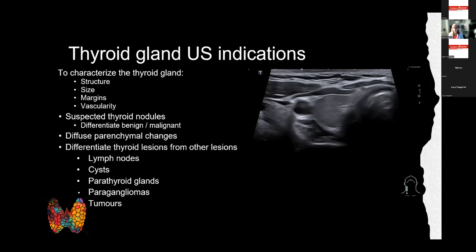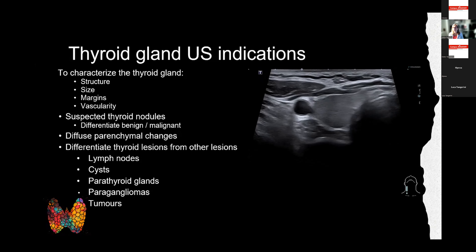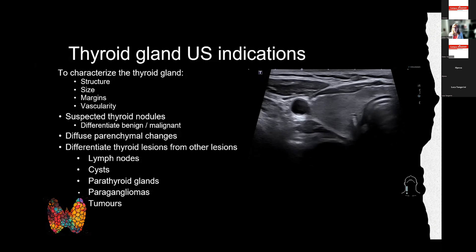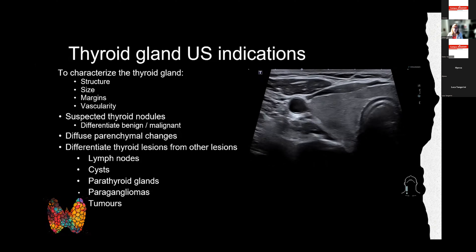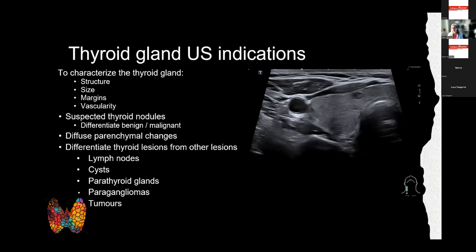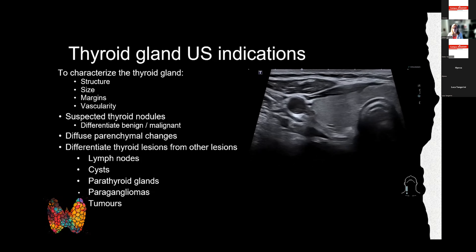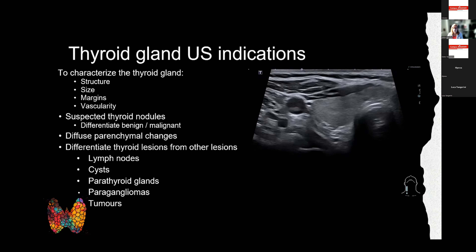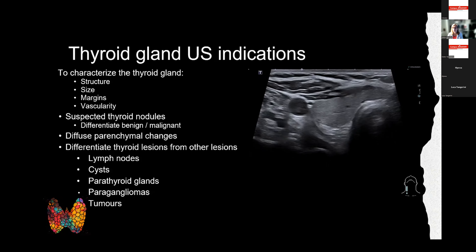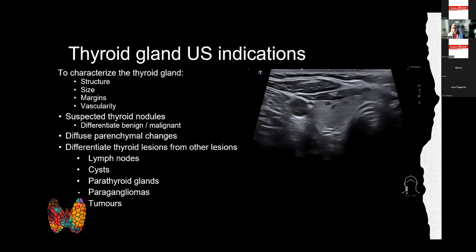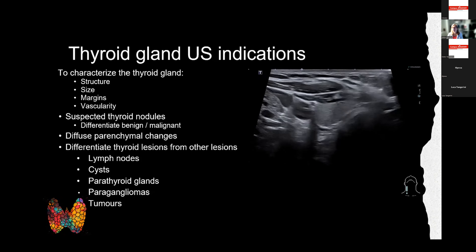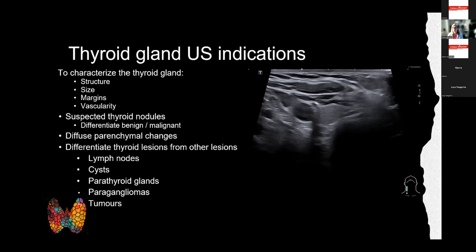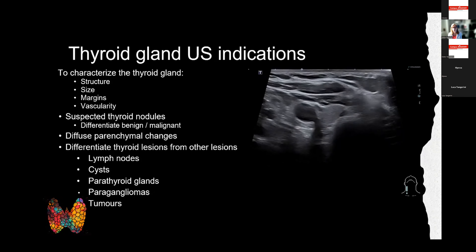Differentiating thyroid lesions can be challenging because adjacent structures may resemble nodules — including lymph nodes, branchial cleft cysts, tumors from salivary glands or soft tissue, and adjacent normal parathyroid glands.